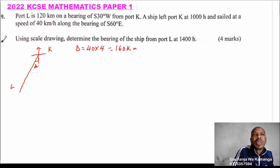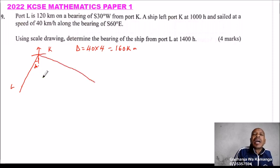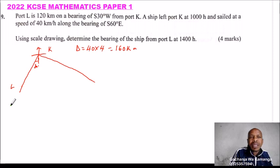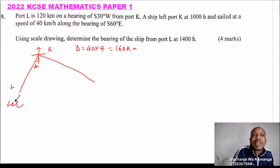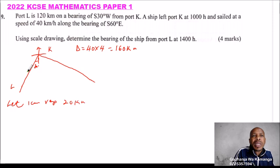The ship travels on a bearing of South 60 degrees East. Now we set the scale: let one centimeter represent 20 kilometers. So KL is 6 centimeters — representing 120 km — and the ship's distance from K is 8 centimeters, representing 160 km.